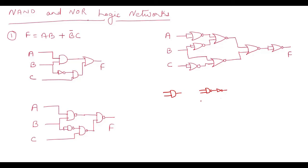Similarly, when representing an AND gate with NOR gates, we take two inverters at the back inputs. Two bubbles will be present, giving us the NOR structure. So to convert an AND gate to NAND, we add a bubble and an inverter at the output. To convert an AND gate to NOR, we add two inverters and two bubbles at the inputs.